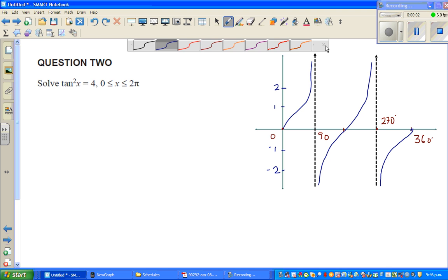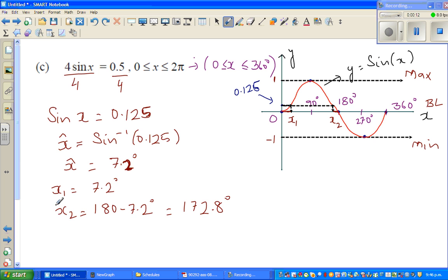Let us look at this question. Solve tan squared x equals 4 and you want to find x between 0 to 2π. In the previous video I didn't give you the answers in radians. The question was in radians, so if you want to simply change this into radians, it is very simple.